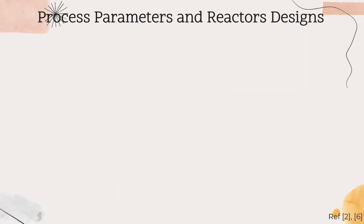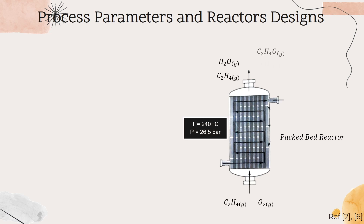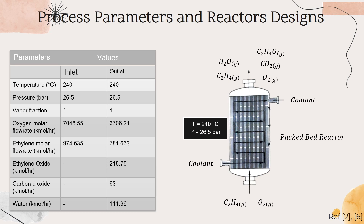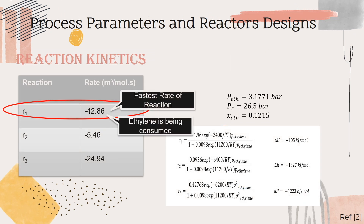Process parameters and reactor design: The reactor used for this process is a packed bed reactor, as the oxidative process can take place more efficiently and quickly in this type of reactor. Temperature and pressure at the inlet and outlet are kept constant at 240 degrees Celsius and 26.5 bar using a coolant. Ethylene and oxygen are consumed, and ethylene oxide, carbon dioxide, and water are formed, meaning all three reactions occurred. Reaction 1 happens the fastest, hence the high amount of water and ethylene oxide compared to carbon dioxide in the outlet stream.